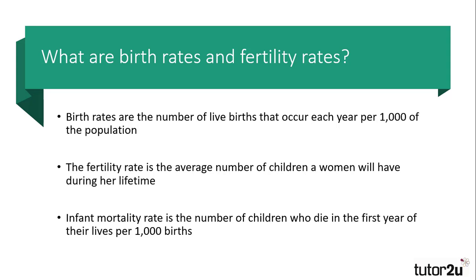Another way of measuring this is through fertility rates. Fertility rates are the average number of children a woman of childbearing age will have. Of course, some women will have no children, some will have multiple children, so it's averaged out across the population of females.